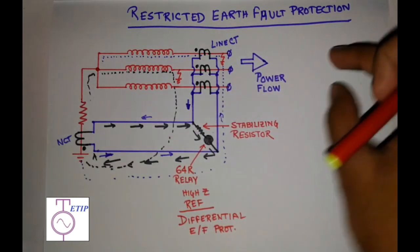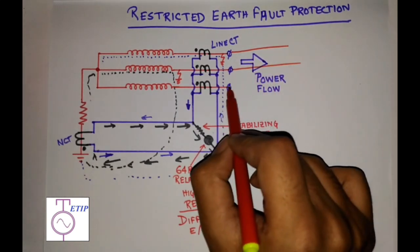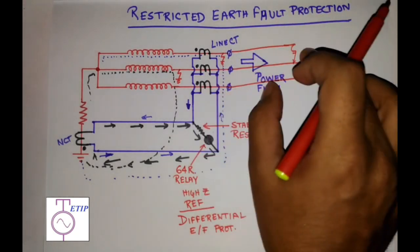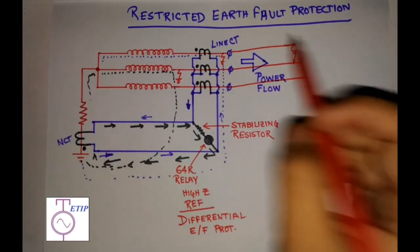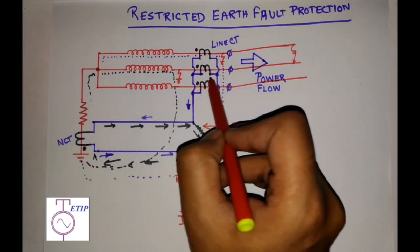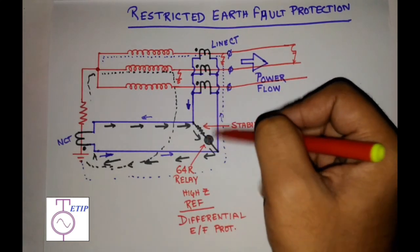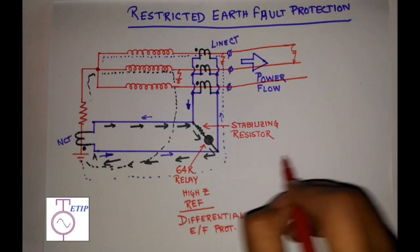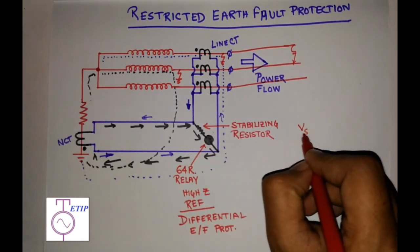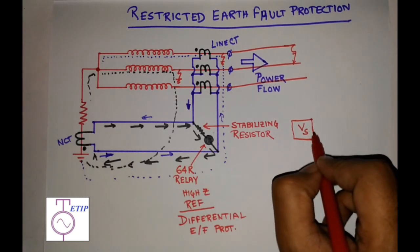Suppose you extend the line and there is a line-to-line fault downstream, causing a huge current to flow. This current causes the CT to saturate and a voltage Vs accumulates across the CTs. This voltage can drive a current through the relay coil, which may cause maloperation of the relay. The voltage Vs has its own formula which we will discuss in upcoming videos.